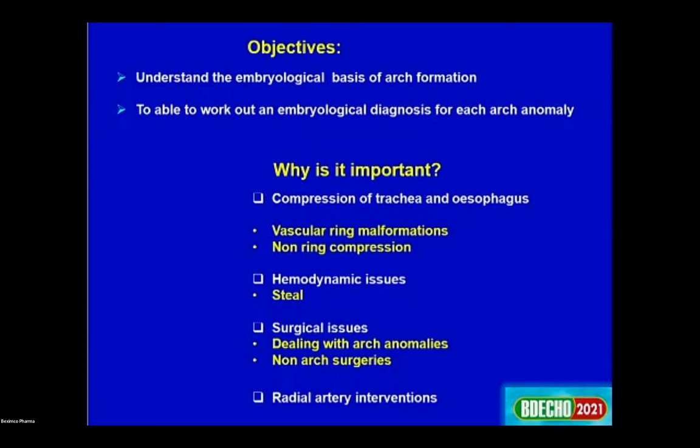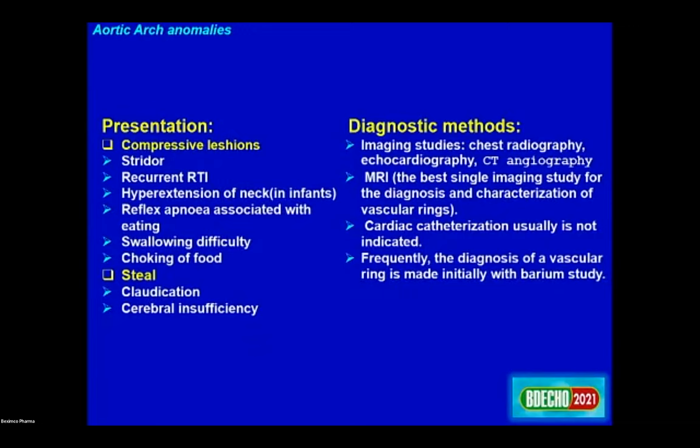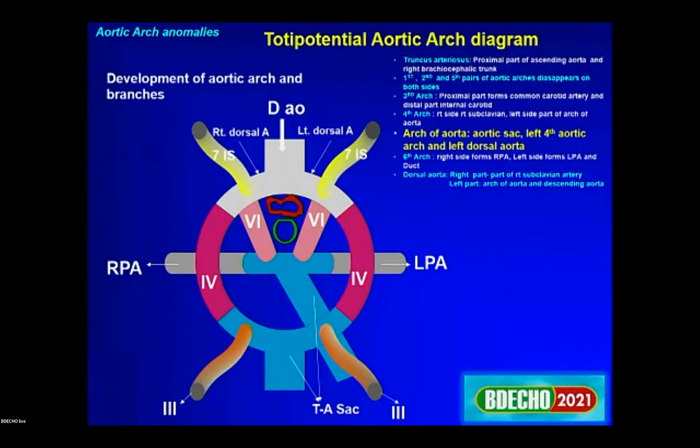These anomalies can present with stridor, swallowing difficulty, and choking on food. Diagnostic methods include chest X-ray, echocardiography, CT, MRI, cardiac catheterization, and barium study. Understanding the developmental diagram makes it straightforward to work out any arch anomaly.